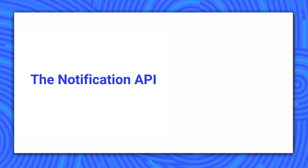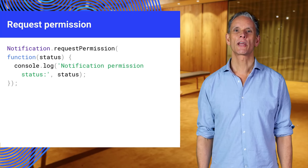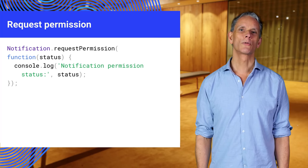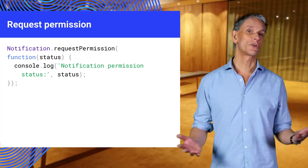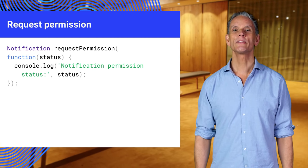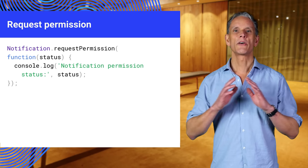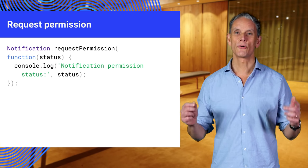Let's look at the Notification API first. This allows developers to display notifications to the user. Before we can create a notification, we need to get permission from the user. This code will prompt the user for permission to show notifications. You can try this out from the browser console. As you'll see later, permission is requested automatically when subscribing to a push service, so there's no need to call this function when using just push notifications.